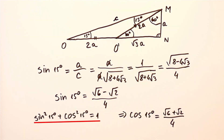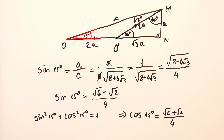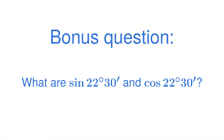And finally, from the identity sine squared of 15 degrees plus cosine squared of 15 degrees equals 1, the cosine of 15 degrees can be calculated. We were able to use this approach because 15 degrees is equal to one half of 30 degrees, and we know the sine and cosine of 30 degrees. With that in mind, I'll leave you with this question: what are the sine and the cosine of 22 and a half degrees?